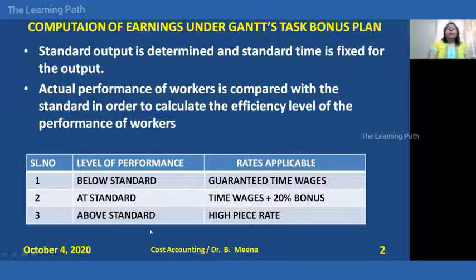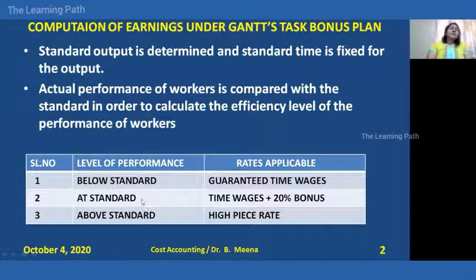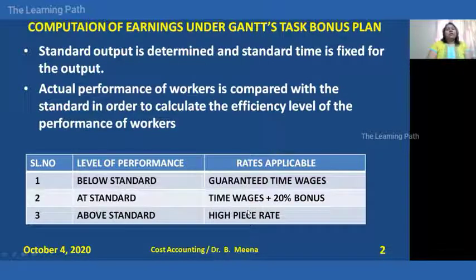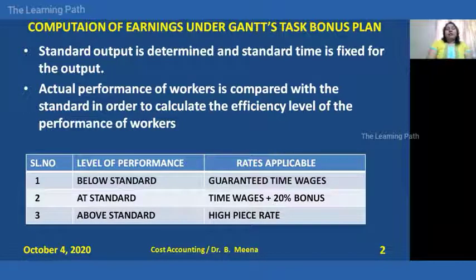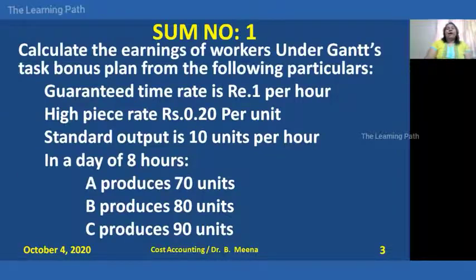If any worker is above the standard, those workers will be paid at the high piece rate. So as per the GANS task bonus plan, there are three differential rates: first, below standard — the company gives only time wages; second, equal to standard — time wages plus 20% of time wages as a bonus; third, above standard — eligible to get the high piece rate. Once we calculate the standard output, we compare it with the actual output of all workers and apply these three rules.